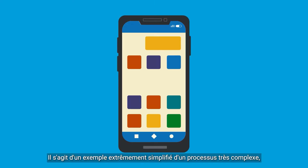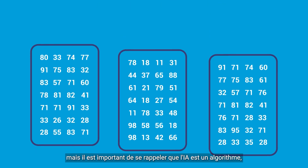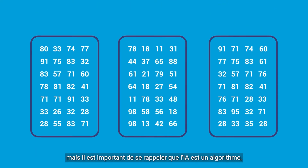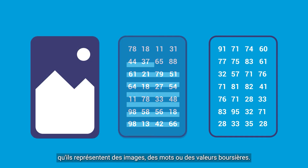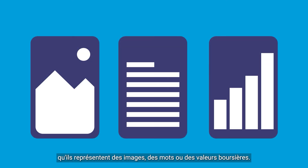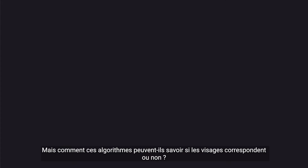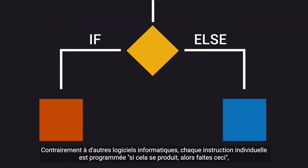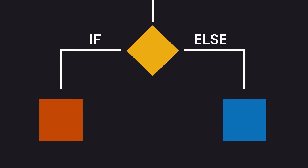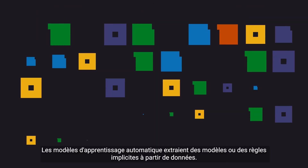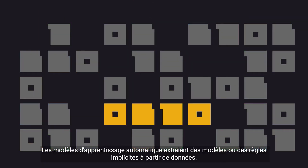This is an extremely simplified example of a highly complex process, but it is important to remember that AI is an algorithm and it only deals with numbers, no matter if they represent images, words, or stock values. But how can these algorithms know if the faces match or not? In contrast with other computer software where each individual instruction is programmed — if this happens, then do this — machine learning models extract patterns or implicit rules from data.